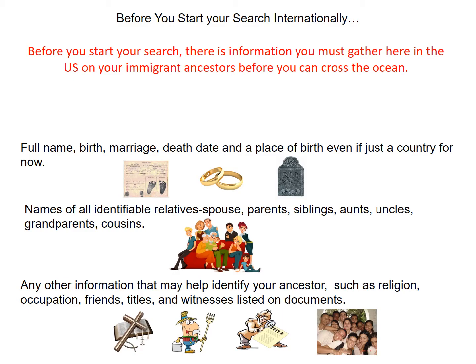Before you start your search, there is information you must gather here in the United States on your immigrant ancestors before you can cross the ocean. Full name including maiden name if applicable, birth, marriage, death, and a place of birth, even if just a country of origin for now. Don't forget to ask family members and even distant relatives about your ancestors' birthplace. You never know who may have personal knowledge on relevant records.